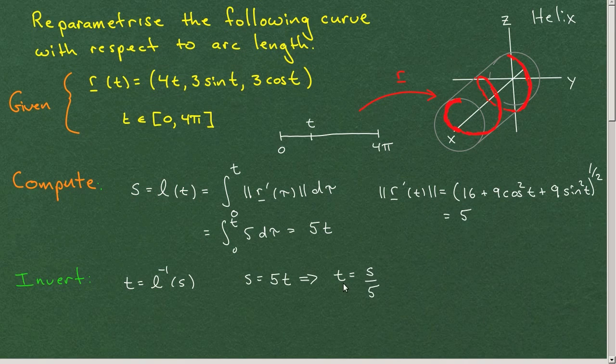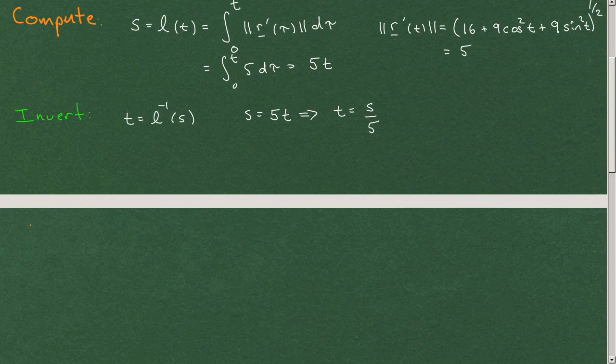Then the final step is to substitute s in terms of t into this to give us our arc length parameterization. And I'll have to go to a new page to do that. So the final step is substitute.